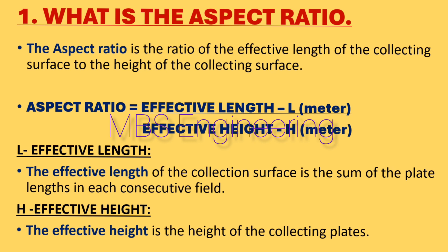What is the effective length, L? The effective length of the collection surface is the sum of the plate lengths in each consecutive field. What is the effective height, H? The effective height is the height of the collecting plates.